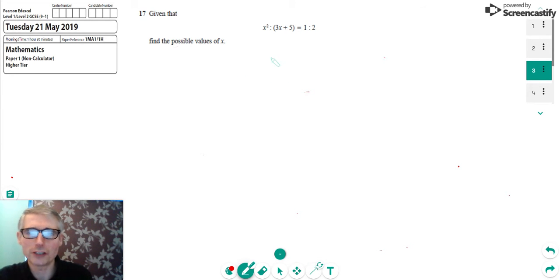It's a question about ratios and quadratic equations. So first of all, we're given that x squared in a ratio to 3x plus 5 is the same as the ratio of 1 to 2. So the first thing that we can do is write them both as fractions. We can say that x squared over 3x plus 5 is equal to 1 over 2.